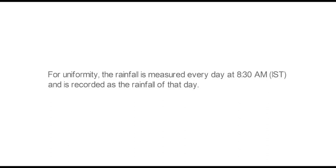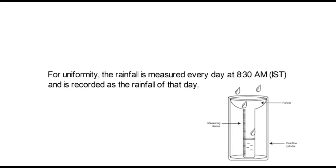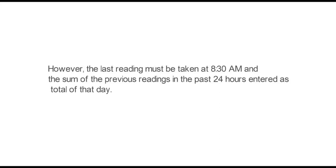For uniformity, the rainfall is measured every day at 8:30 a.m. and is recorded as the rainfall of that day. That means exactly at 8:30 a.m., rainfall will be measured with the respective measuring gauge, and that measured amount of rainfall will be declared as the net amount of rainfall of that day. However, the last reading must be taken at 8:30 a.m., and the sum of the previous readings in the past 24 hours entered as total rainfall of that day.